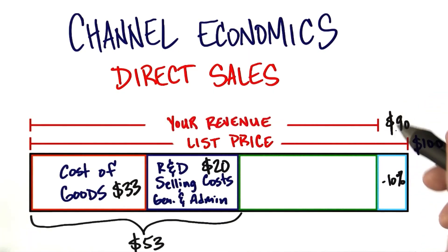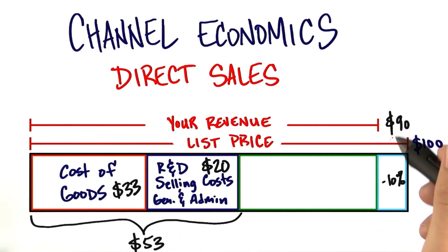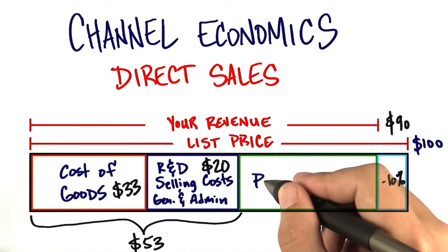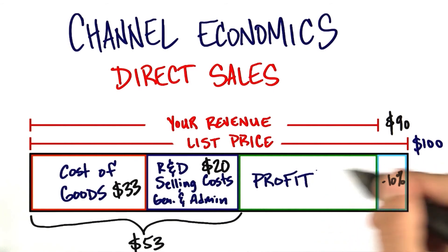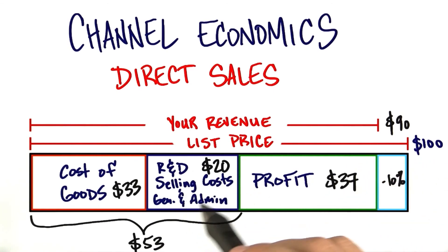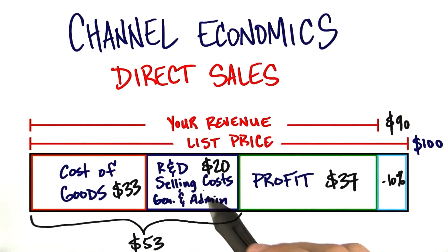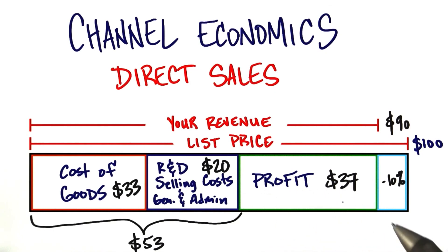So wait a minute — you're getting $90, but you spent a total of $53 building the product and keeping the lights on. And that leaves right in the middle how much profit you have. In this case it would be $37. So your selling costs were embedded here — the commission or direct sales cost, whatever you were paying your direct sales people — and you made $37 selling directly.